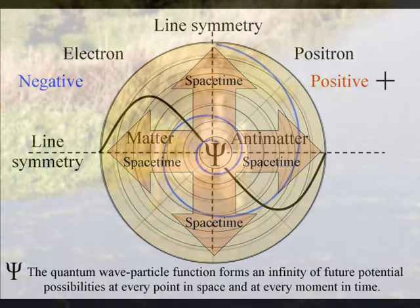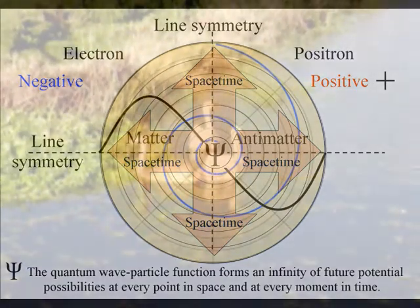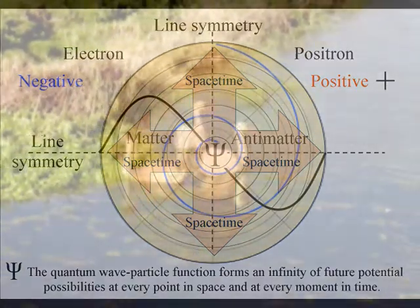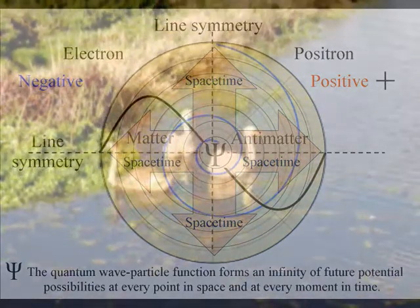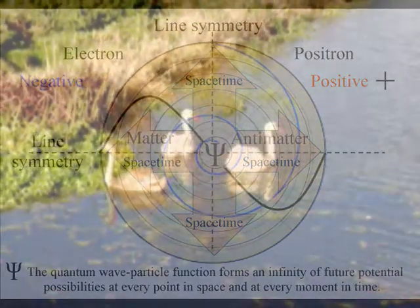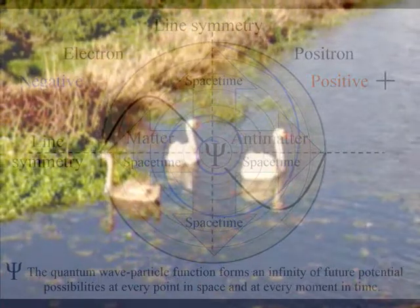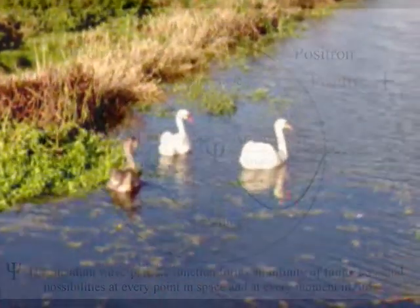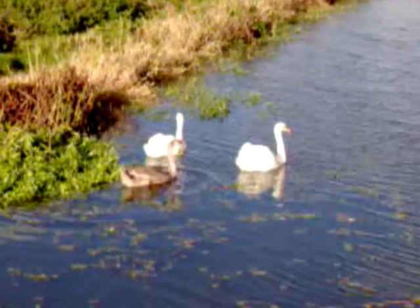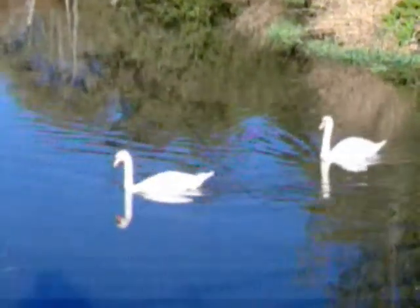It is because life can choose when and where to collapse a quantum wave particle function, or probability function, breaking the symmetry, that we have free will. Life will create its own ripples in the fabric of space-time, forming its own broken symmetry of its own evolutionary path.